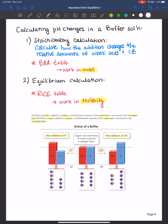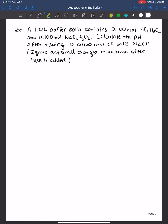Let's do an example problem together so you can see how the BAH table works. And once again, it's just stoichiometry that you're doing. But since everything is one to one to one to one in your chemical reaction, that's where the BAH table is kind of a fast and easy way to determine what's left over in your beaker after adding acid or base. In this example here we have a one liter buffer solution that contains 0.100 moles of acetic acid and 0.100 moles of sodium acetate. Let's calculate the pH after adding 0.0100 moles of solid sodium hydroxide. We're going to ignore any small changes in volume after the base is added.